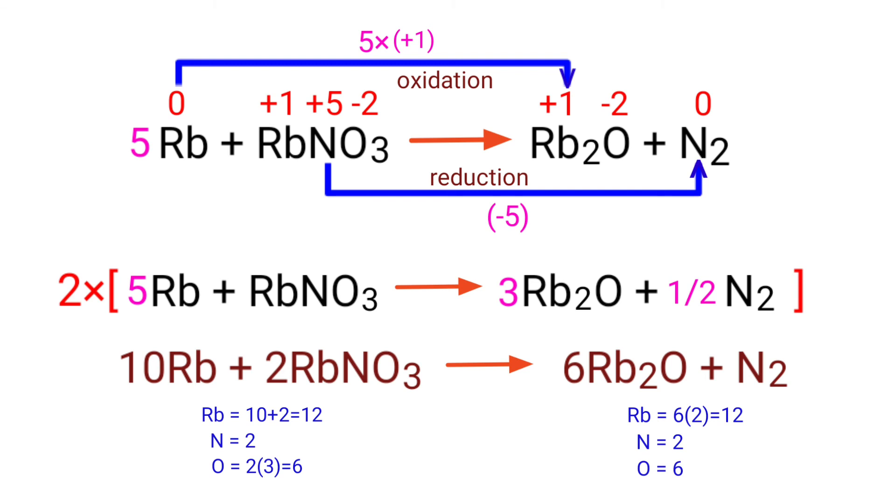The equation is now balanced. There are 12 rubidium atoms, 2 nitrogen atoms, and 6 oxygen atoms on both sides.